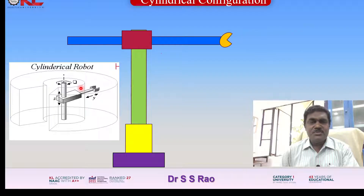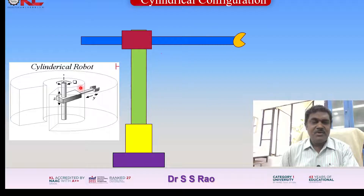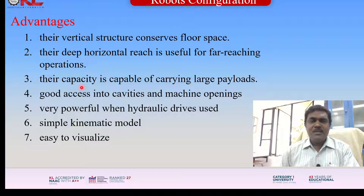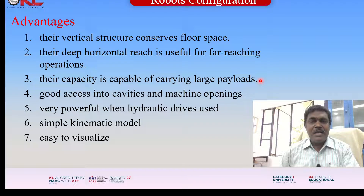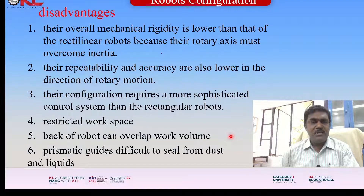With the help of these three motions, we can cover the entire cylindrical space — the work area. What are the advantages of this robot? Their vertical structure conserves floor space; their deep horizontal reach is useful for far-reaching operations; their capacity is capable of carrying large payloads; good access into cavities and machine openings; very powerful when hydraulic drives are used; simple kinematic model; easy to visualize.